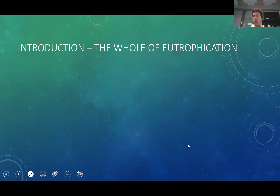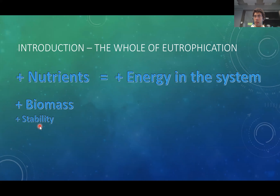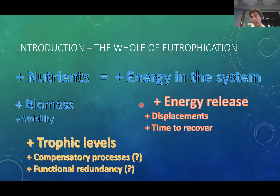What would be the role of eutrophication in this process? Why eutrophication? Eutrophication basically means adding nutrients, and when you add nutrients, you are adding energy to the system. From one side, everyone would agree that adding energy increases biomass, and biomass can stabilize the system — biology has the potential to stabilize physical-chemical parameters. But more energy also means more trophic levels, more trophic complexity, which may represent a higher range of compensatory processes to counterbalance a perturbation, or it can mean the system has no more functional redundancy to cope with one. On the other hand, more energy in the system may mean that in the event of a perturbation, you have a higher energy release, resulting in higher displacements or higher times to recover — hypothetically.